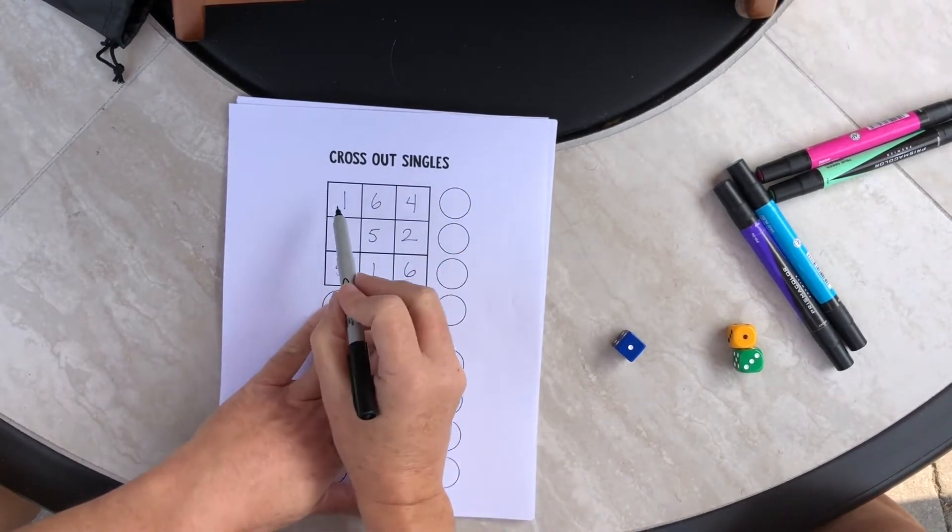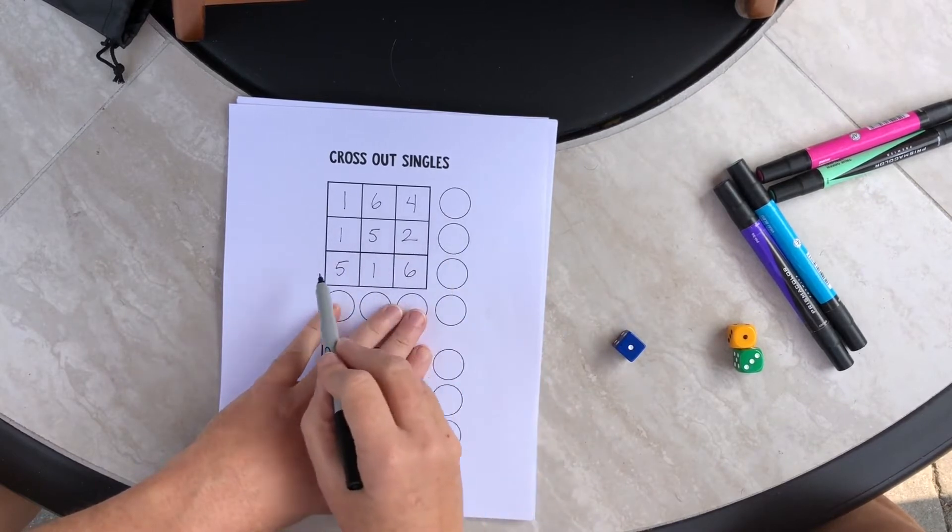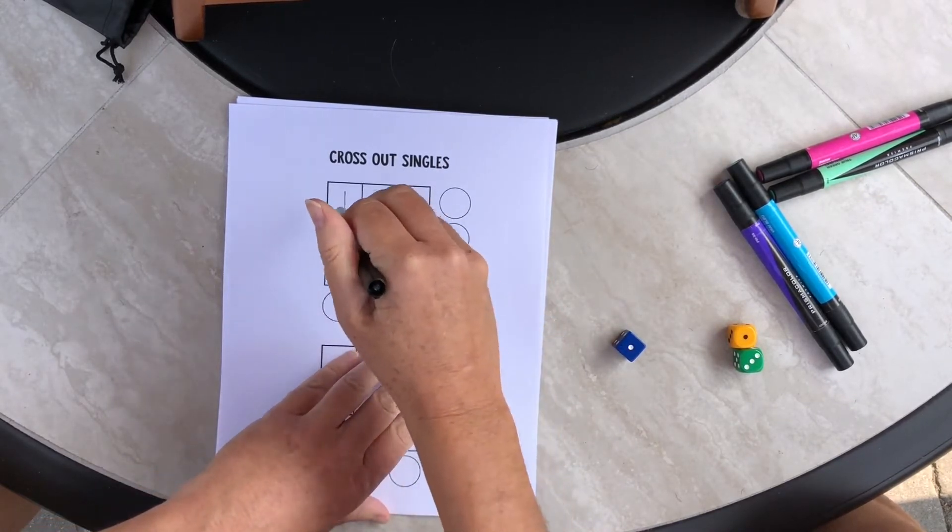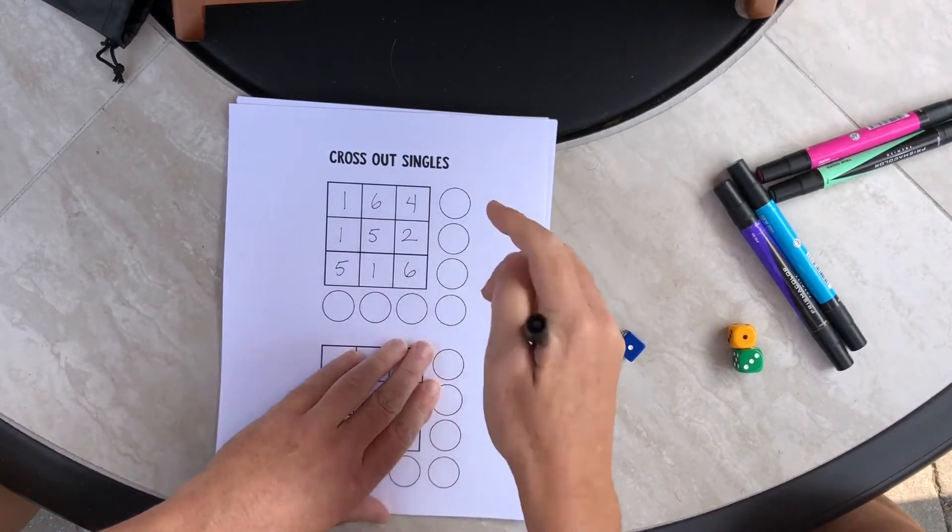Now it's time to add these. We're going to add across, down, and diagonally, and write the answers in these circles.